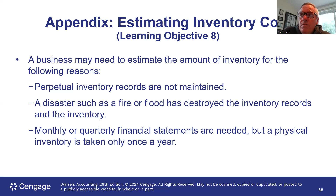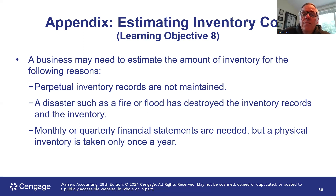We know from our previous discussions of inventory that the beginning inventory plus the purchases gives us goods available for sale, and then we have to make an allocation between the ending inventory — that which is in the balance sheet — and the cost of goods sold — that which goes to the income statement.